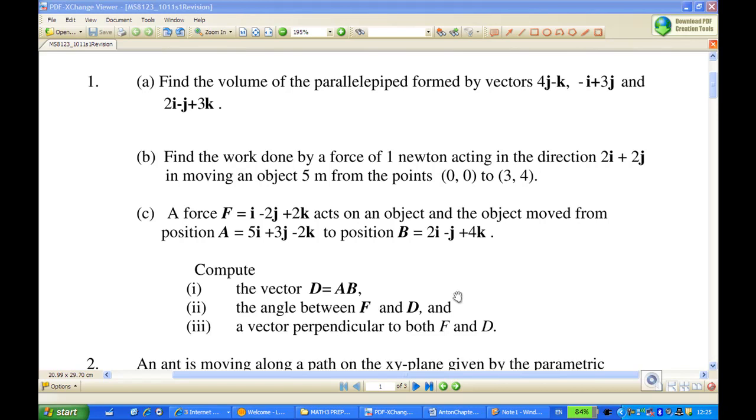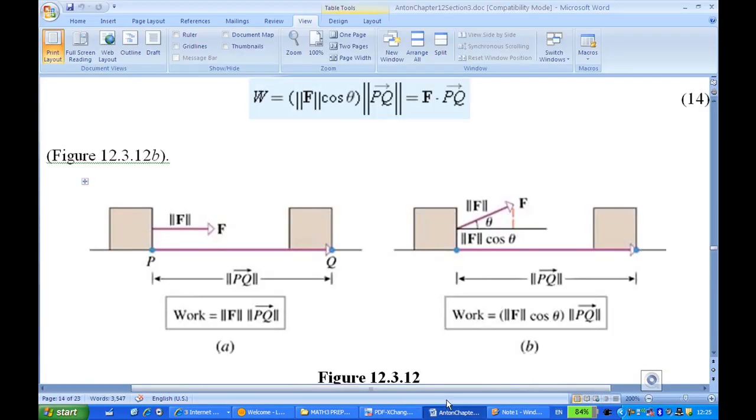To do this, let me make a reference to Howard Anton, Chapter 12, Section 3. The work done by a force, in this case, if the force is moving an object from P to Q, then the work done is the force F dot product of PQ, the vector PQ.